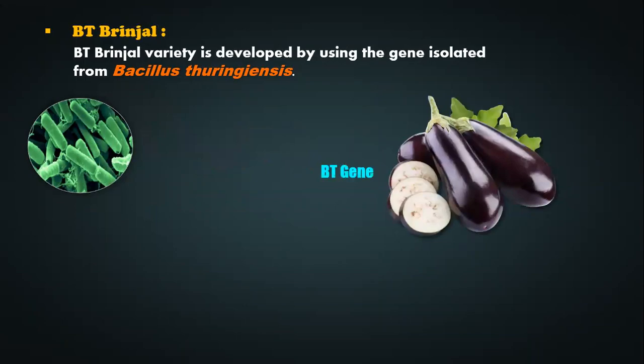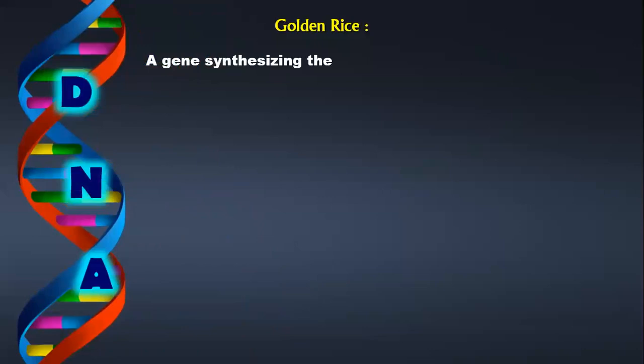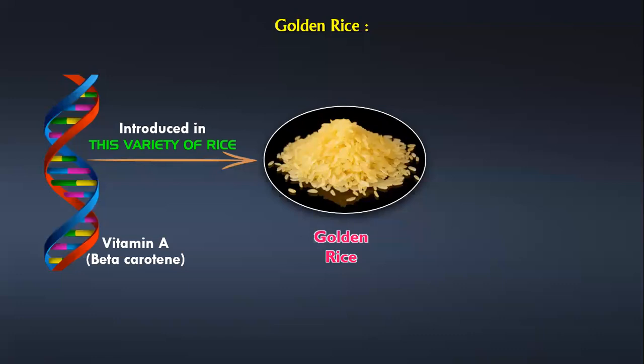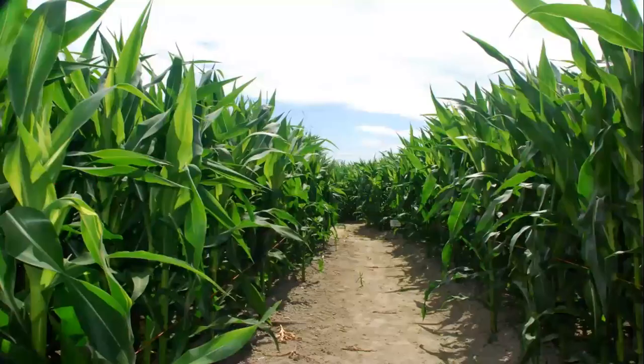Similarly, Bt brinjal can be produced where you take the gene of Bacillus thuringiensis bacteria and integrate it into the brinjal. Talking about golden rice, a gene synthesizing vitamin A, that is beta carotene — which is also an edible color — is introduced into the rice plant to give a variety called golden rice. This golden color comes from beta carotene. Compared to earlier varieties, the 2005 variety contains 23 times more beta carotene.